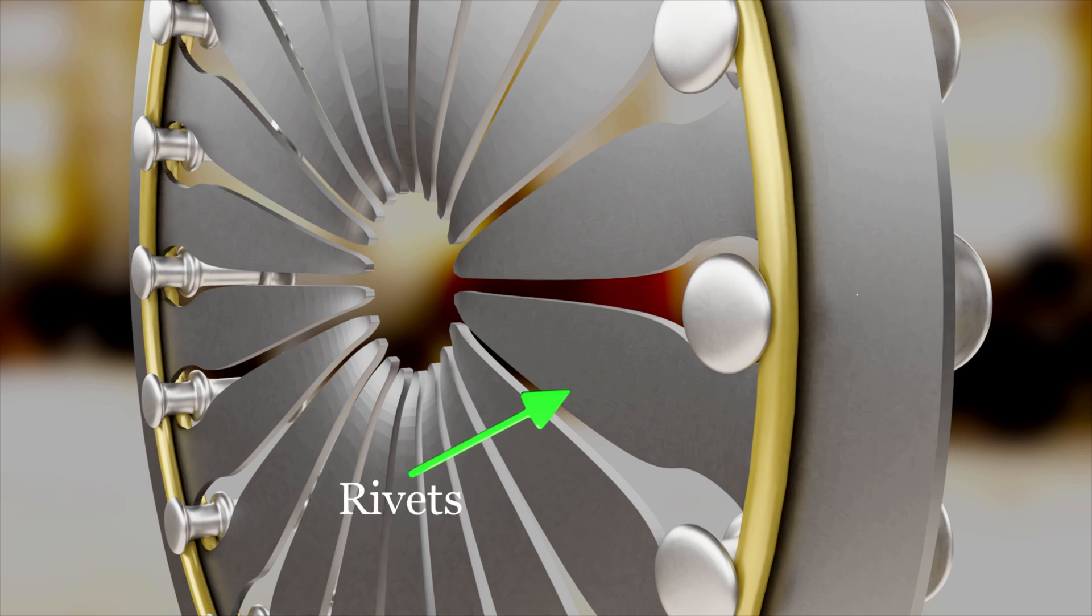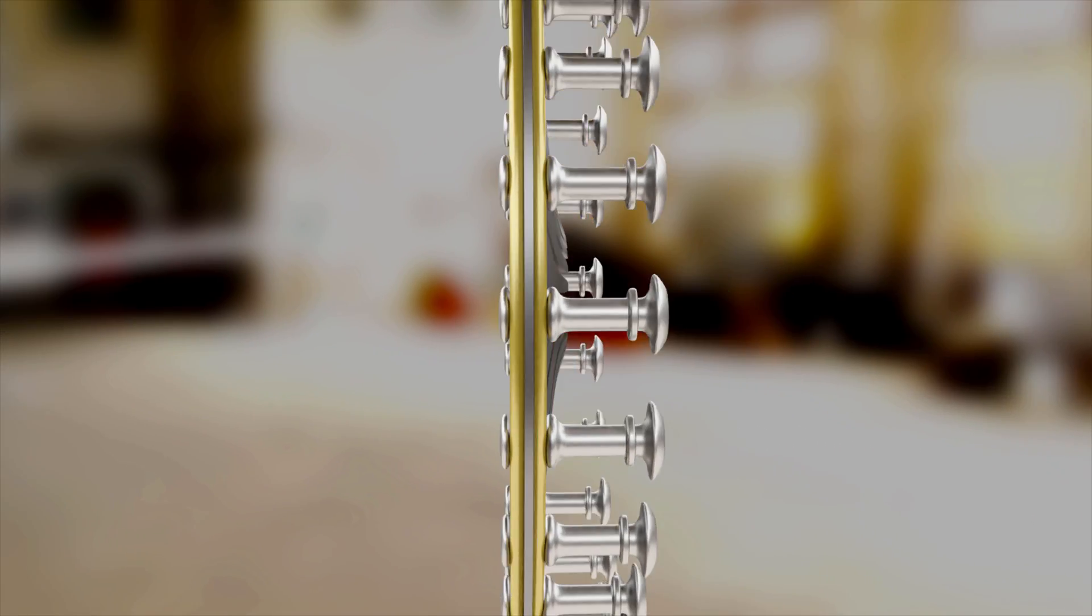These two rings are held in position by rivets, and these rivets in turn are supported by the clutch cover.